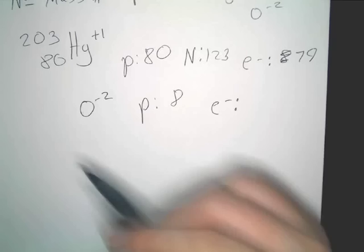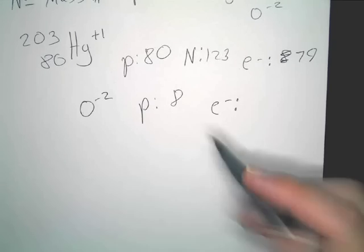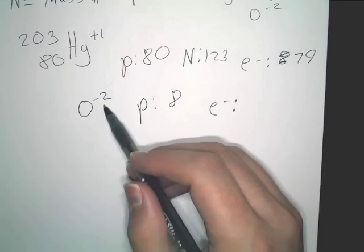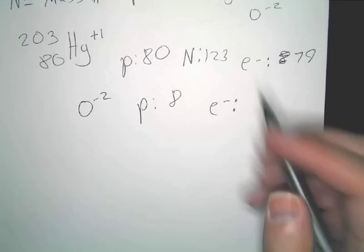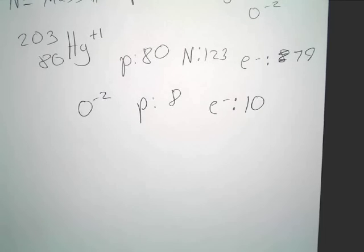Now, this is a negative two. So, what that tells us is that we have two more electrons than protons. So, if it's negative two, you don't subtract two, you add two. Ten electrons. That's it. That's all you got to do.